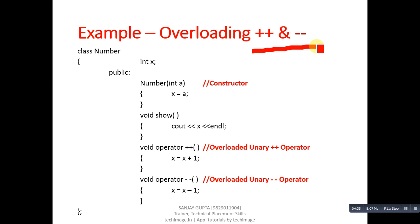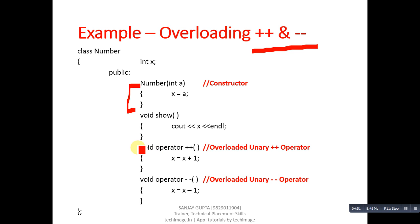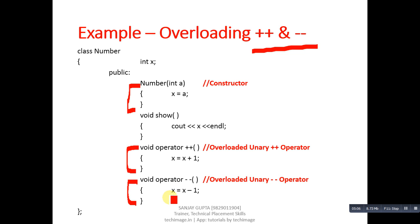Again, the class is named 'number'. A constructor is implemented which assigns the value of argument a into X. The show method prints the value of X on the console. Two overloaded functions are defined: operator++() increments X by 1, and operator--() decrements X by 1.